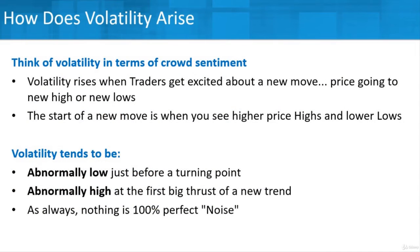So let's think about where volatility comes from. You can really think of volatility as crowd sentiment — what does the crowd think, what do other traders think? Volatility rises when traders get excited about a new move. Maybe it's a new event that caused a new move, something in the news causing something to happen. The price starts going up to new highs, or possibly going to new lows if it's bad news. Either way, traders are taking notice — maybe excited, maybe disappointed — but the crowd is getting involved.